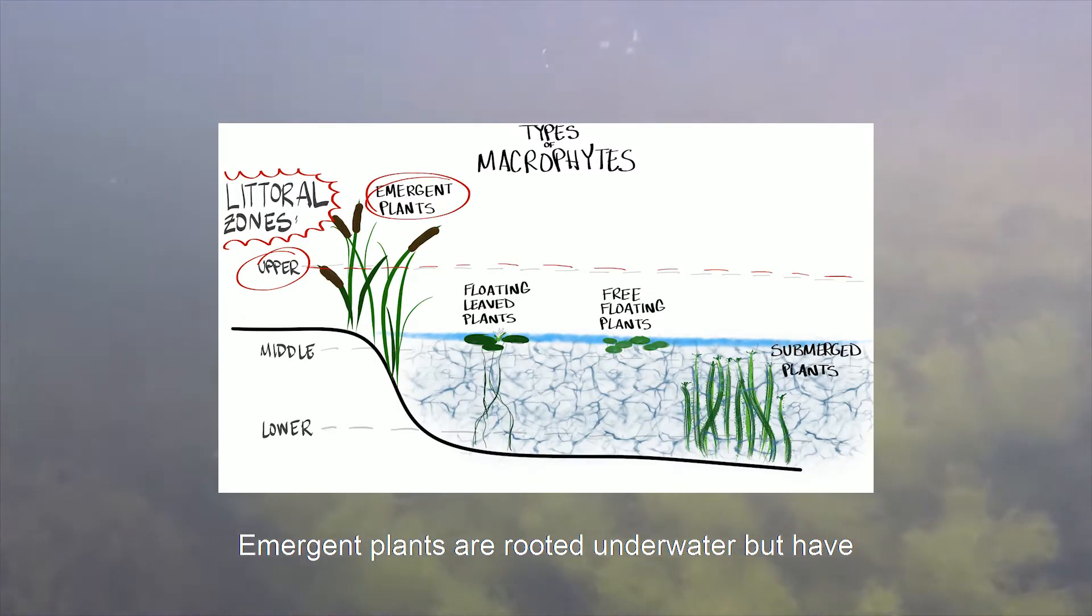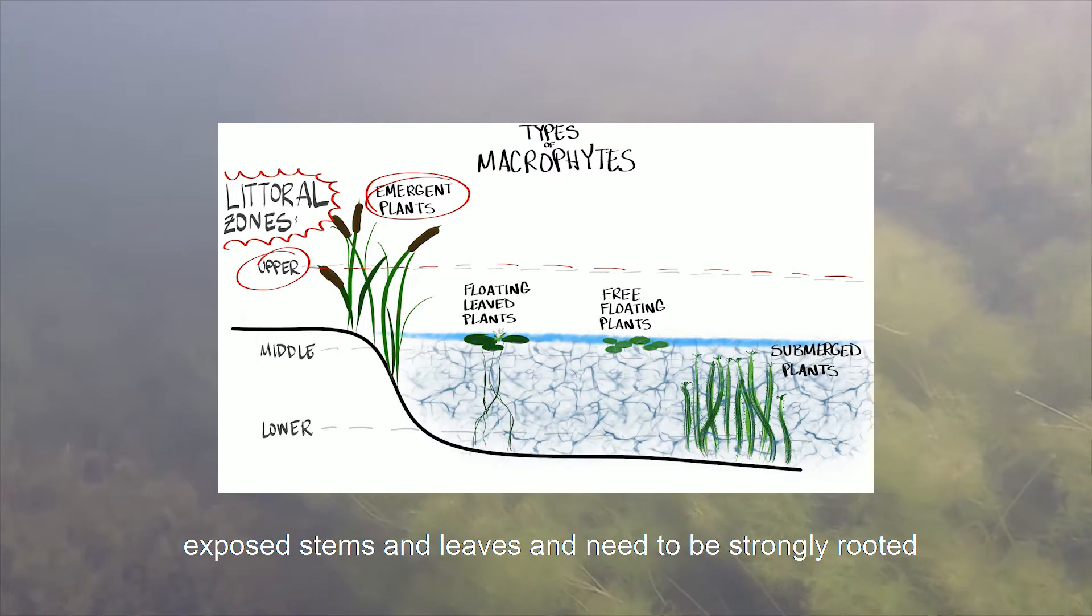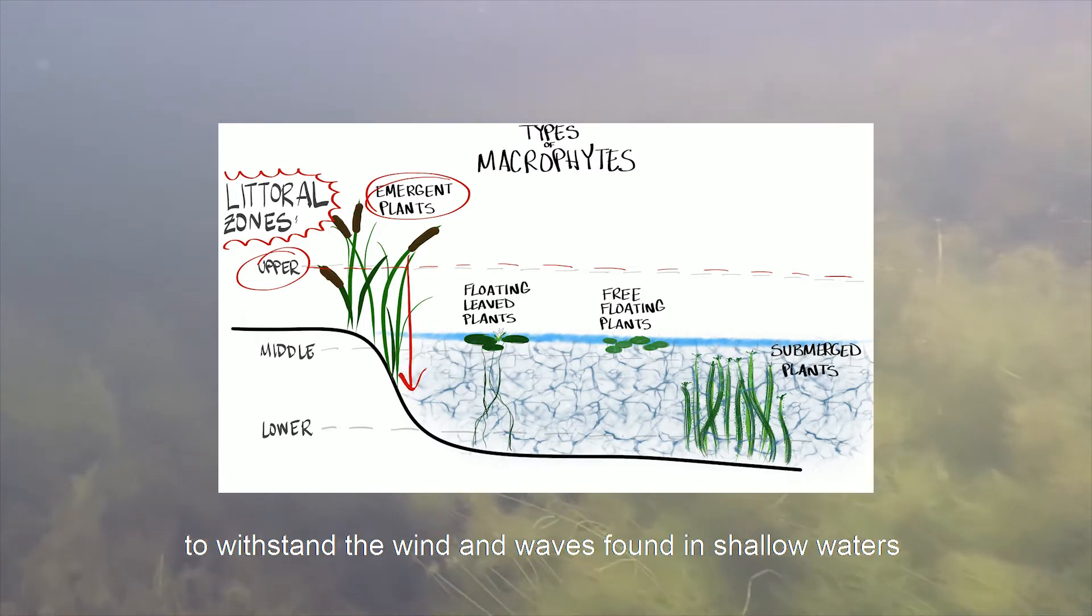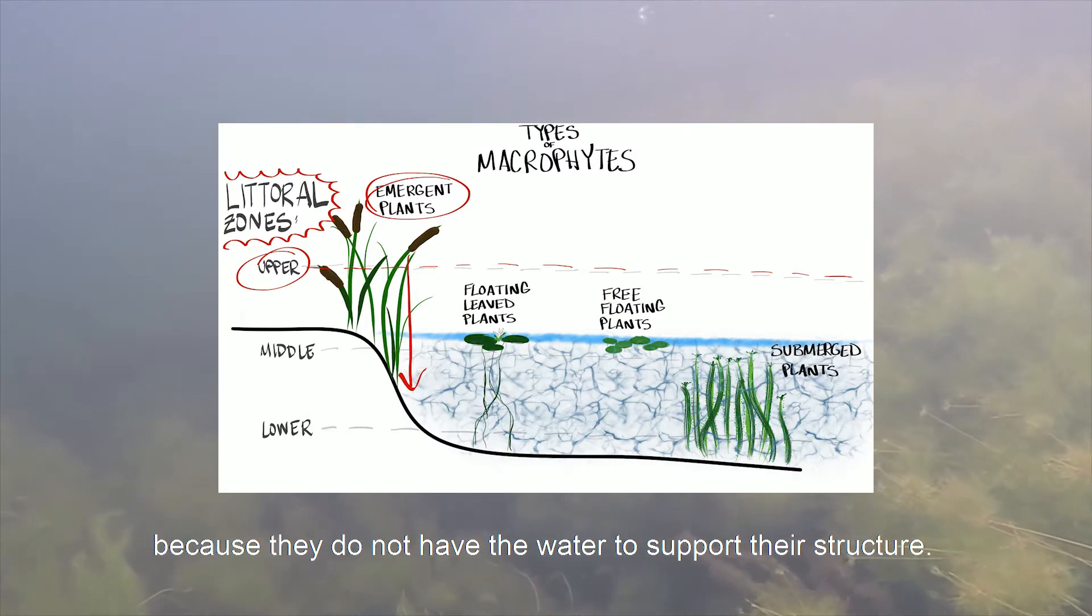Emergent plants are rooted underwater but have exposed stems and leaves and need to be strongly rooted to withstand the wind and waves found in shallow waters because they do not have the water to support their structure.